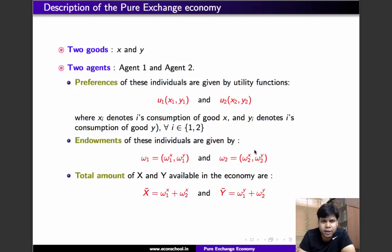So what does that mean? That simply means that individual 1 has omega 1 x units of x and omega 1 y units of y. Similarly, endowment of individual 2 is omega 2 x, omega 2 y.